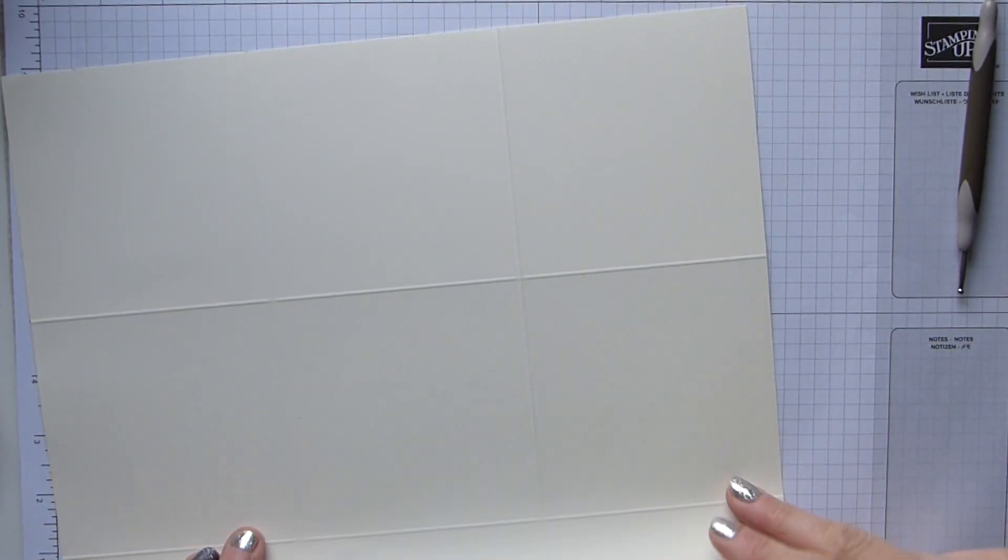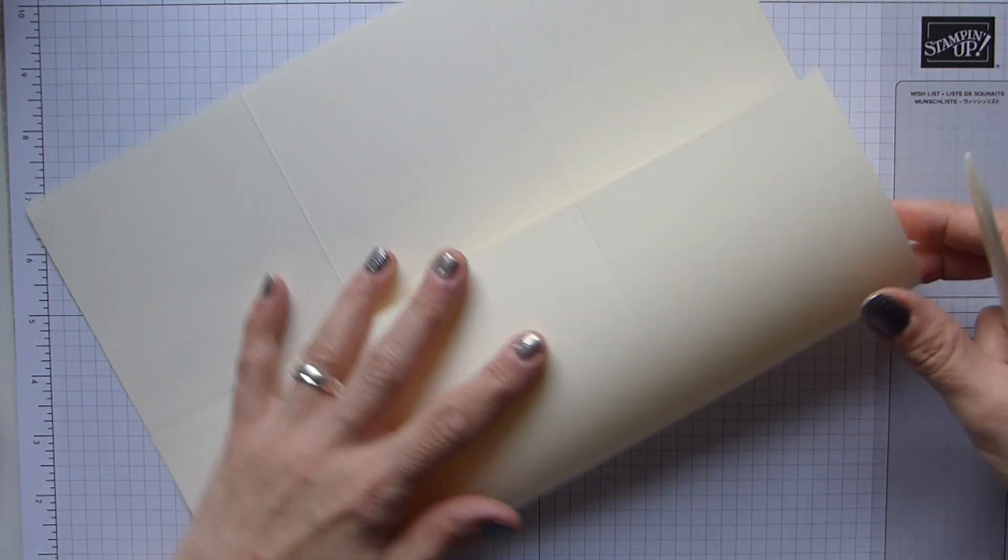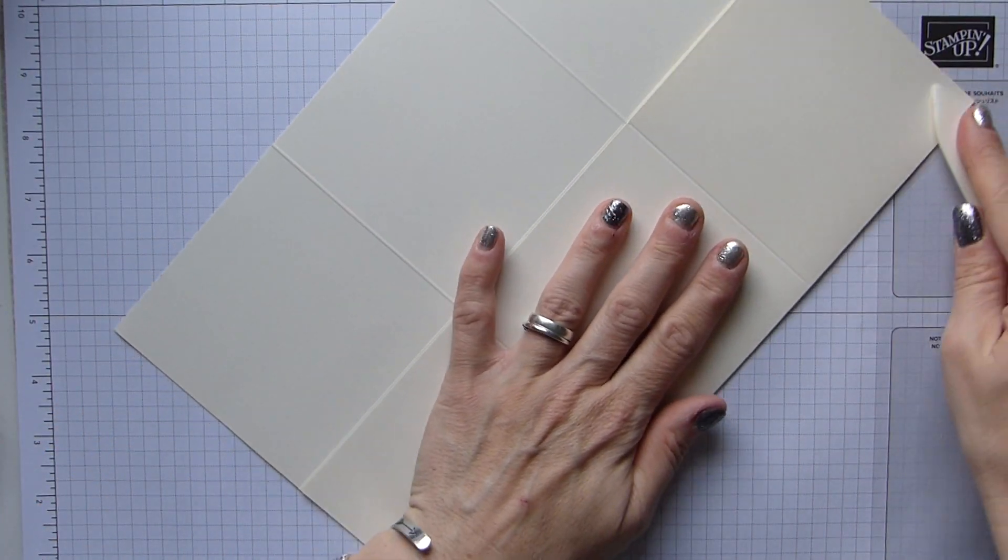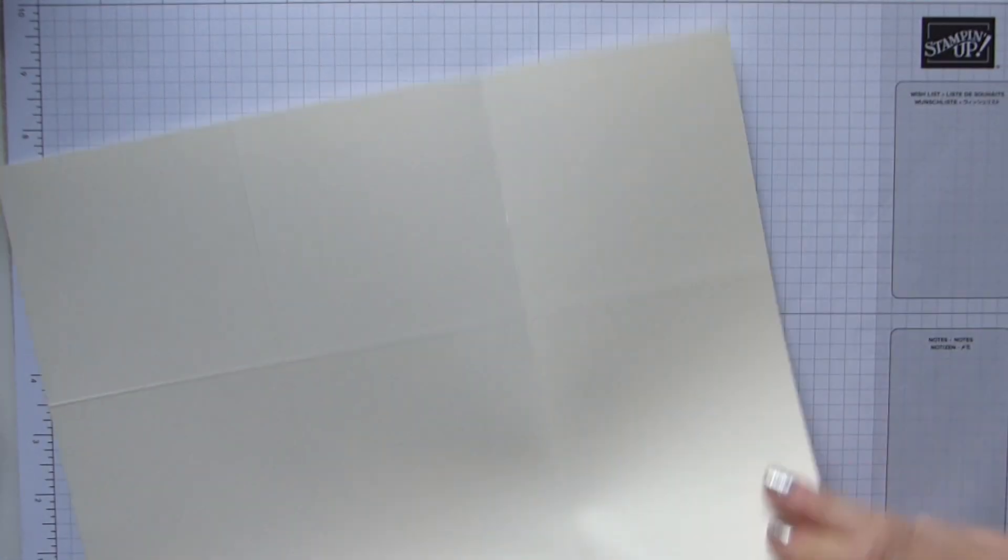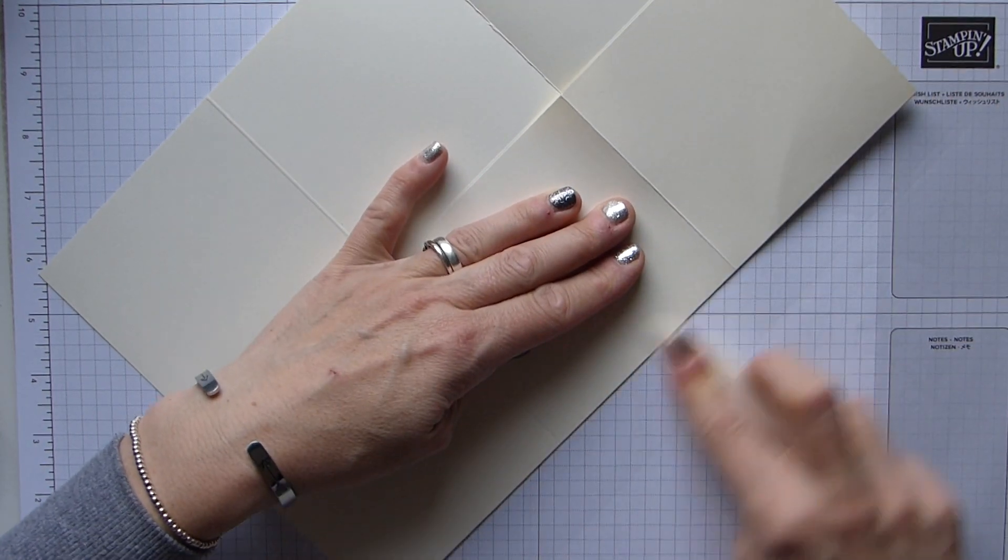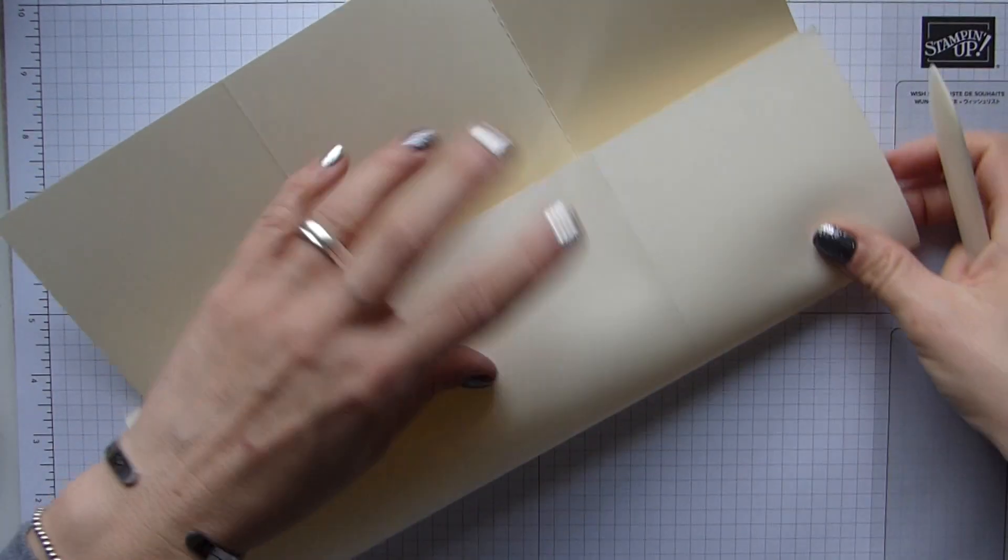And that's the simplest part. We're then going to fold and burnish all of these score lines. It's hard when you have 12 by 12 because you can't get it all on the page, so I'm just going to go around fold and burnish all of them.